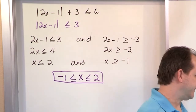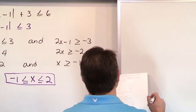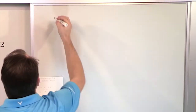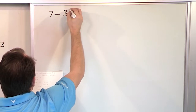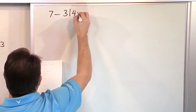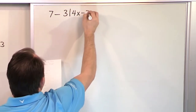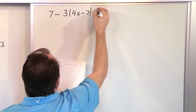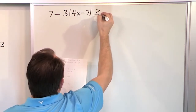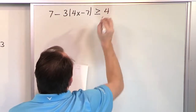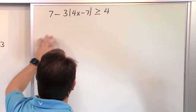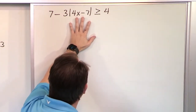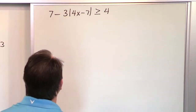So that's basically what you do — we're doing it over and over again. Here we have something similar: 7 minus 3 times the absolute value of 4x minus 7, greater than or equal to 4. The same sort of thing — the very first thing you want to do is get everything else out of the way so you have the absolute value by itself on the left-hand side.